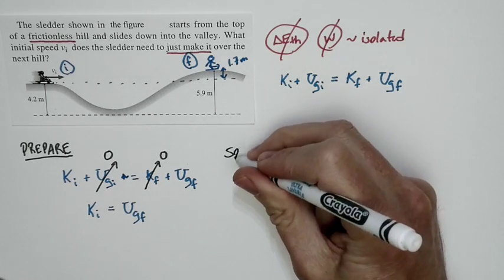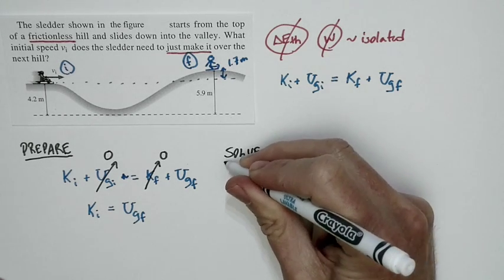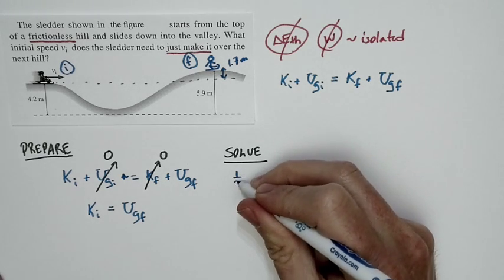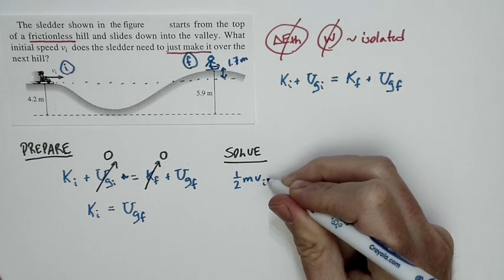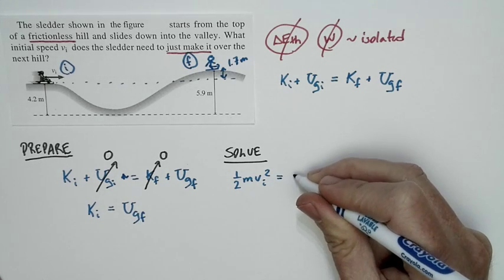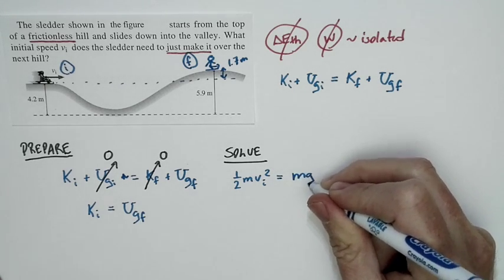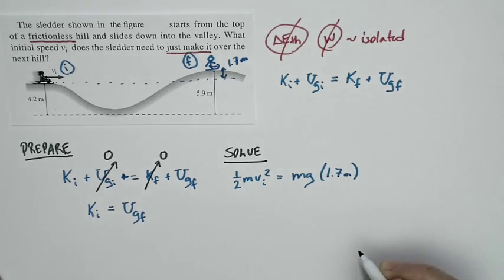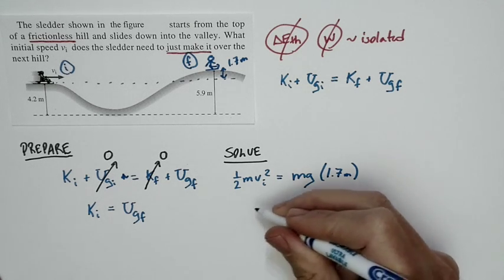So our solution is actually quite straightforward. We just have to write down an expression for the initial kinetic energy, one-half m times v_i squared, and set that equal to our final potential energy. But that's just m times g times the change in height, which is 1.7 meters.